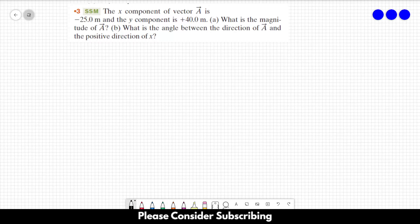Number 3, the x component of vector A is minus 25 meters. So, the x component of the vector is equal to minus 25 meters. The y component of the vector is equal to plus 40 meters.